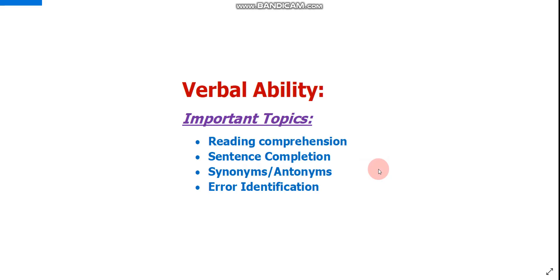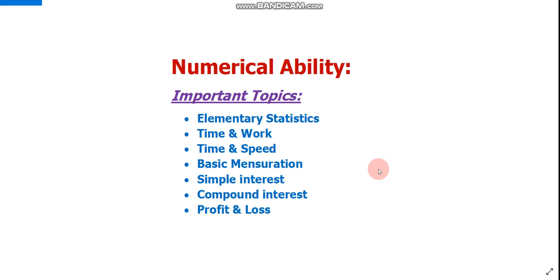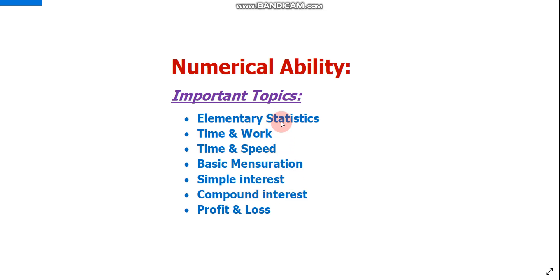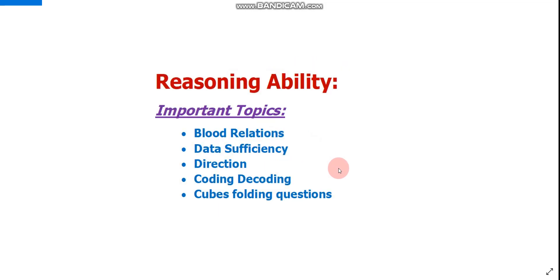Now let's move to Numerical Ability. These are the do-or-die topics: Elementary Statistics, Time and Work, Time and Speed, Basic Mensuration, Simple Interest, Compound Interest, and Profit and Loss. Search each topic on Google and do practice of at least five questions on each topic, then you will easily clear the Numerical Ability cutoff.